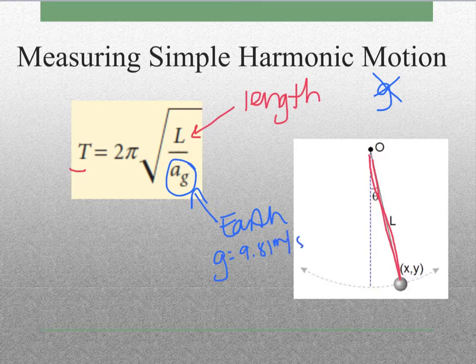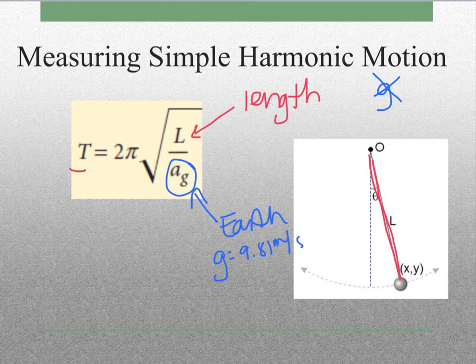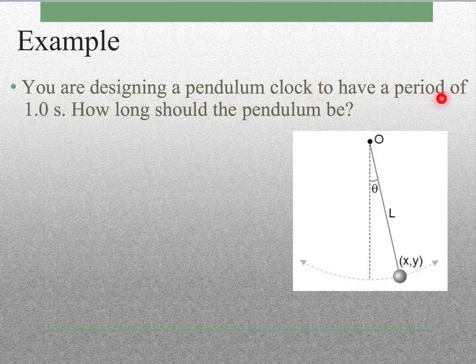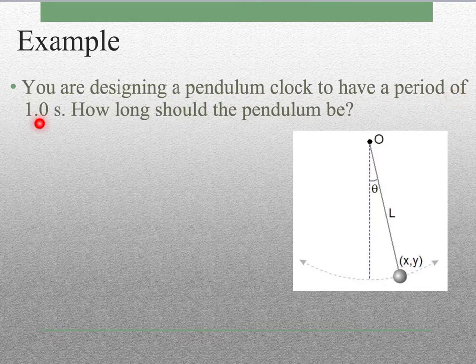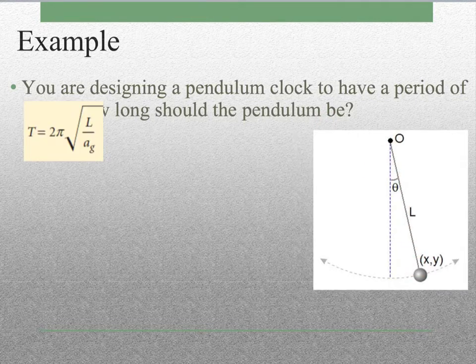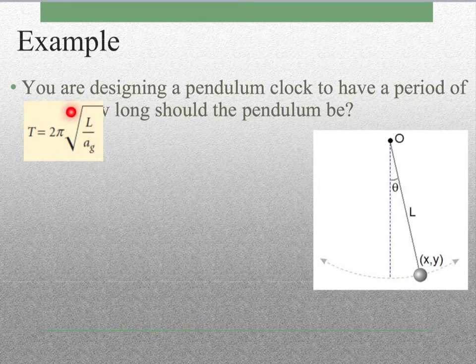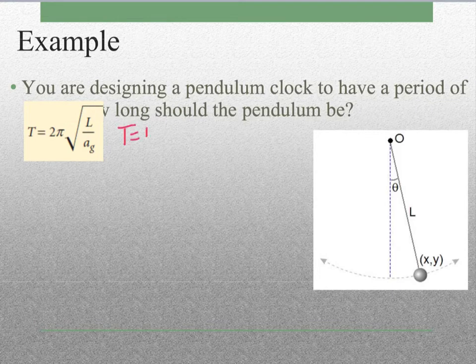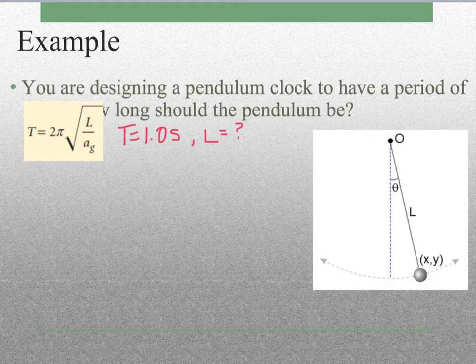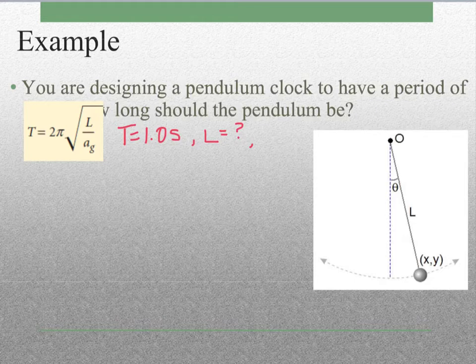Now let's look at an example of how to calculate this. You're going to design a pendulum clock to have a period of 1 second. How long should you make the length of this pendulum? First, we need to look at our equation. It looks like it accidentally covered up, but it said that the period needs to be 1 second. We want to know what L will be. We are going to have this clock on Earth, so our ag will be 9.81.